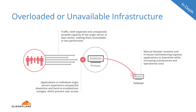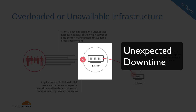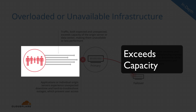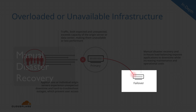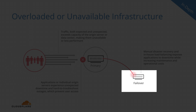The other primary problem occurs when performance degrades so badly due to network congestion or overloaded infrastructure that the applications stop becoming available to users altogether. Common causes of unavailability include the following: applications or individual origin servers experience unexpected downtime and hard-to-troubleshoot outages; traffic, both good or bad, exceeds the capacity of a specific origin server or data center, making them unavailable; and many companies have manual disaster recovery and in-house load balancing, which increases risks of application failure while adding maintenance and operational costs.